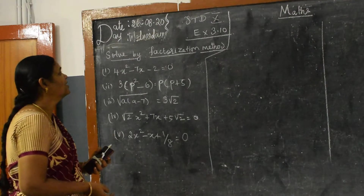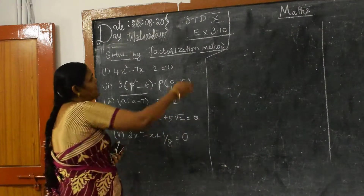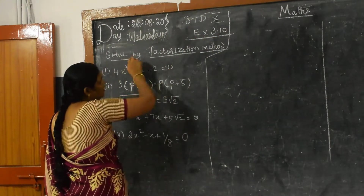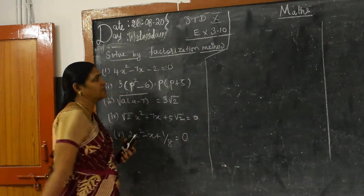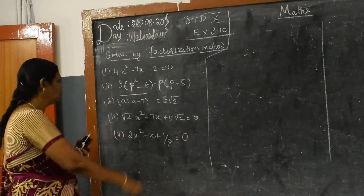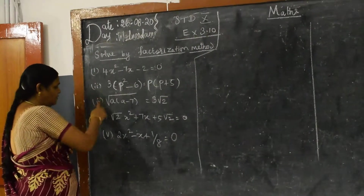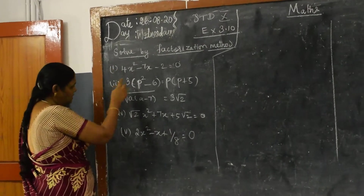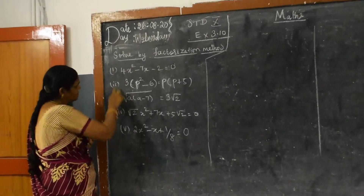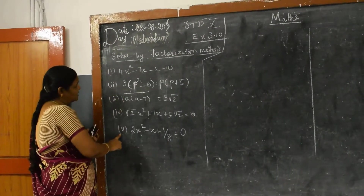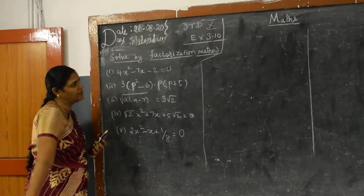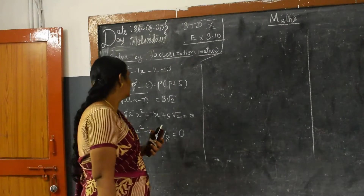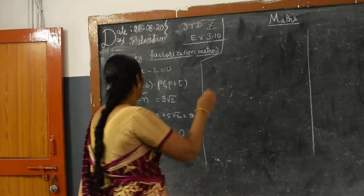Great children, now we are going to see exercise 3.10 — solve by factorization method. In this one they have given 5 problems. I am going to work out 3 problems; the first and fourth problem will be your homework problem.